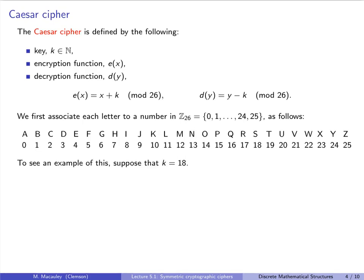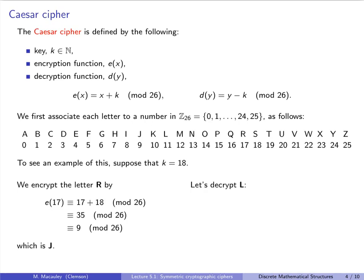And to see an example of this, let's suppose that k equals 18. And then we can encrypt the letter r as follows. We take r upstairs, and we say, well, that's equal to 17. So we add 17 plus 18 mod 26, which is 35 mod 26, which is just 9 mod 26. And using our table, we see that that is j. Now, let's decrypt the letter r. So let's do this in reverse. First, we look at our table, and we see that r is equal to 11. So we take 11, and we subtract k, which is 18, mod 26, and that is negative 7. And mod 26, that is 19. And that is t, as we can see from our table.